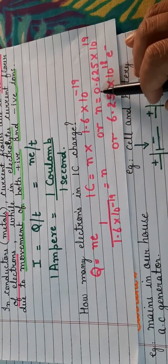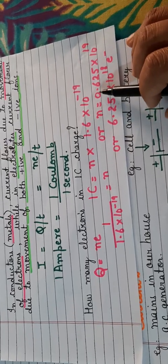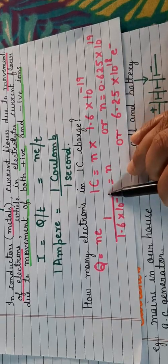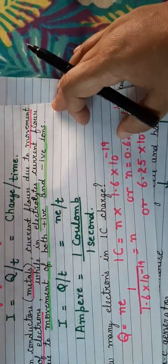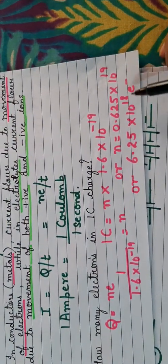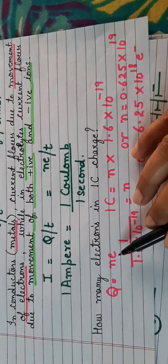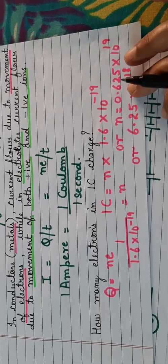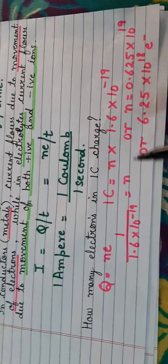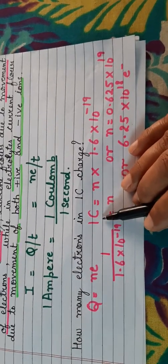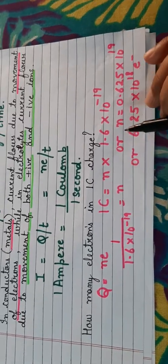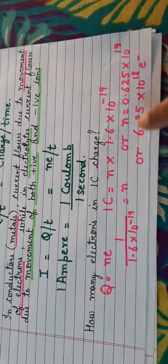10 divided by 16 is 0.625. So N = 0.625 × 10⁺¹⁹. Shifting the decimal one place to the right gives 6.25 × 10¹⁸ electrons. Therefore, 6.25 × 10¹⁸ electrons flow through 1 coulomb of charge. If asked for 2 coulombs, multiply by 2; for 5 coulombs, multiply by 5.